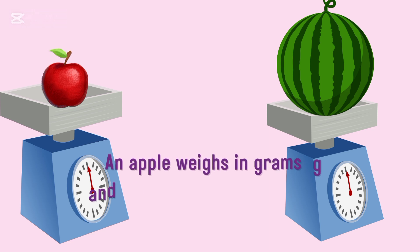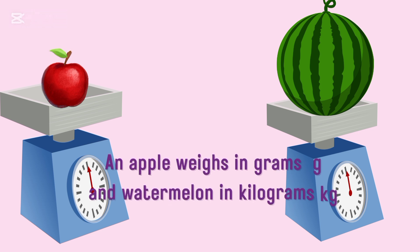As you see in the picture, an apple weighs in grams because it's lighter in weight, and a watermelon is in kilograms because it's heavier.